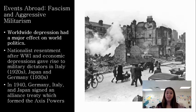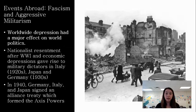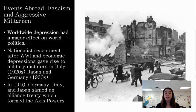In Europe, the Depression played a large role, as did the Treaty of Versailles. Nationalist resentment after World War I and economic depression gave rise to military dictatorships in Italy, obviously in Germany, and in Japan. In 1940, Germany, Italy, and Japan signed an alliance and formed the Axis powers — something FDR would reference in his Arsenal of Democracy speech as a really big threat.